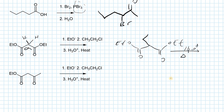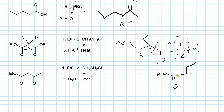After hydrolysis and decarboxylation, we end up with a carboxylic acid bearing the introduced alkyl group. The lost fragment leaves as carbon dioxide plus ethanol from ester hydrolysis. This is the malonic ester synthesis product — a carboxylic acid with two more carbons than the starting material.